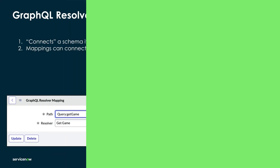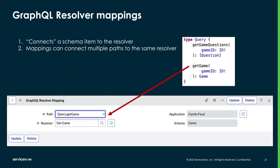Let's take a look at this example. Our schema has a query function called getGame, as we see here. We'll use the path field to identify what part of the schema we want to map, and the resolver to tell it what script to run when that function is called.